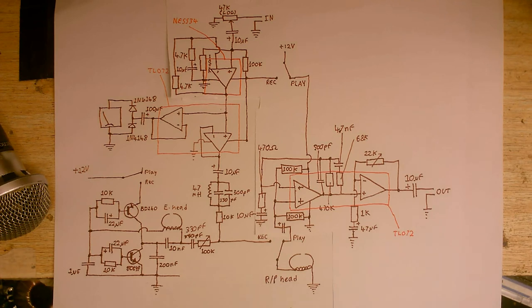Over here we have the bias oscillator. Now, in my particular tape recorder, it oscillates at about 96 kilohertz.